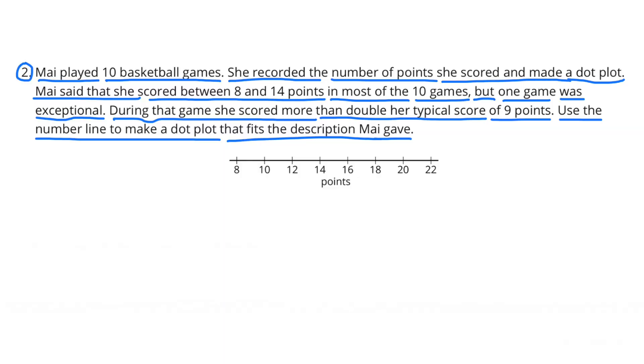Number 2. Mai played 10 basketball games. She recorded the number of points she scored and made a dot plot. Mai said that she scored between 8 and 14 points in most of the 10 games. But one game was exceptional. During that game she scored more than double her typical score of 9 points. Use the number line to make a dot plot that fits the description Mai gave.